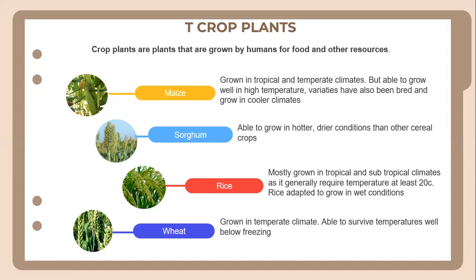Sorghum is able to grow in hotter, drier conditions than other cereal crops. Rice is mostly grown in tropical and subtropical climates, as it generally requires temperatures of at least 20°C, and is adapted to grow in that condition. Finally, we have wheat, grown in a temperate climate and able to survive temperatures below freezing.